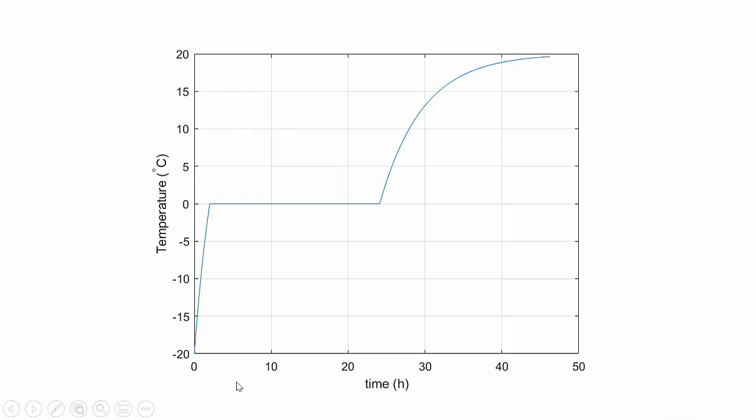The distribution over the whole time: we see in the beginning, we start from minus 20 when the ice starts to warm up. It's quite a big temperature difference to the ambient temperature. And it rises up to 0 degrees when the ice starts to melt.